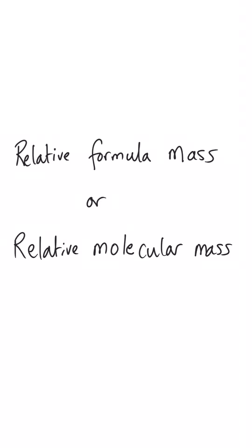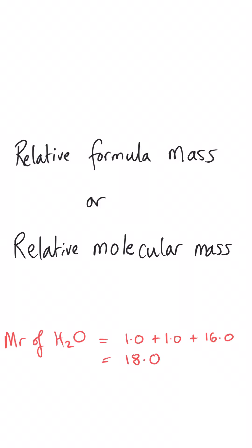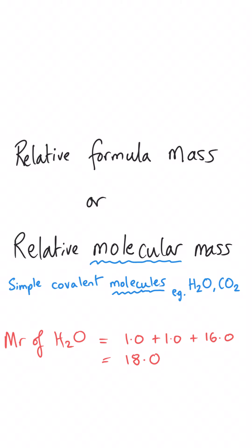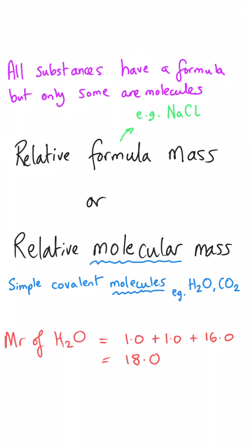When studying A-level chemistry, we take the term relative atomic mass and apply it to larger substances that have a formula, and that's where the distinction comes in between relative formula mass and relative molecular mass. The correct term we should really use is relative formula mass. Relative molecular mass only refers to things that are molecules — simple molecules such as H₂O, CO₂, etc. However, only some things are molecules, whereas all substances have a formula — so this encompasses ionic compounds such as NaCl as well, which is definitely not a molecule but certainly has a formula.